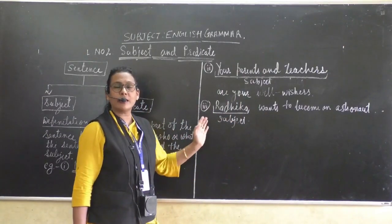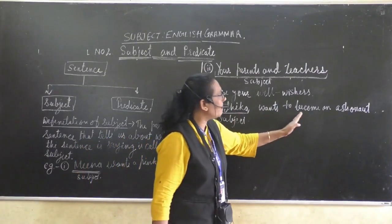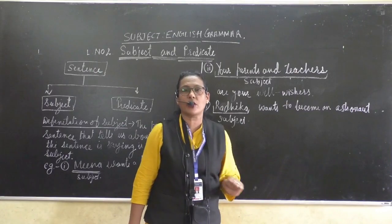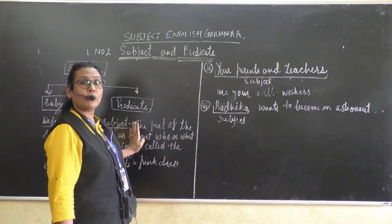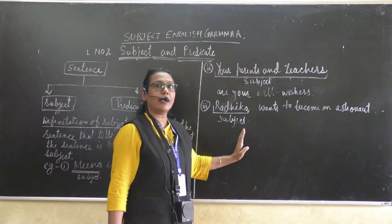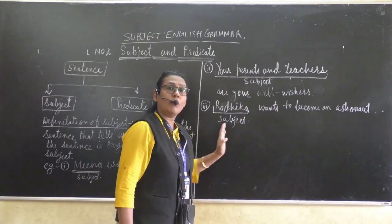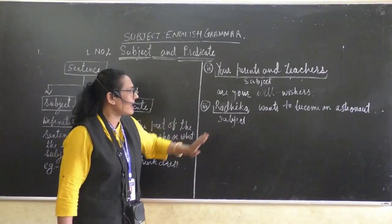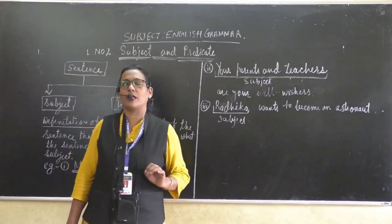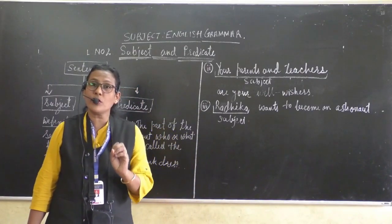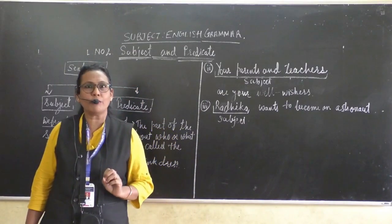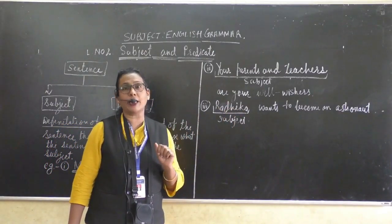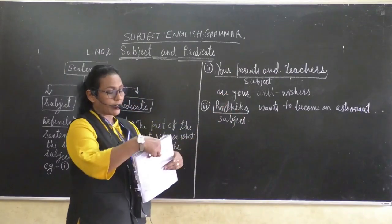The third example is: 'Radhika wants to become an astronaut.' Who wants to become an astronaut? Radhika — that is what the sentence is about. So here in the sentence, Radhika is the subject. In short, children, the subject is a naming word — a name of a person, place, thing, or animal. This is called the subject.